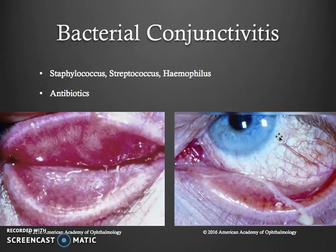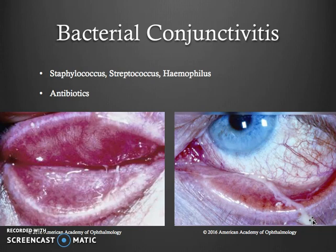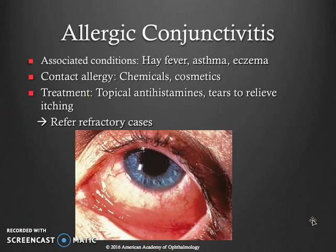Bacterial conjunctivitis, on the other hand, looks different. You can see a white purulent discharge, and antibiotics are recommended in this scenario. Allergic conjunctivitis can be related to generalized allergies or to a contact allergy, and these are certainly treated differently.